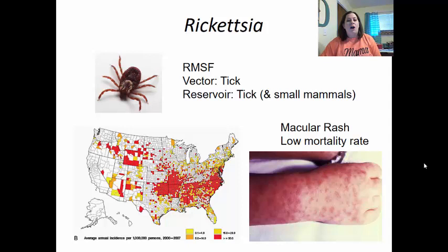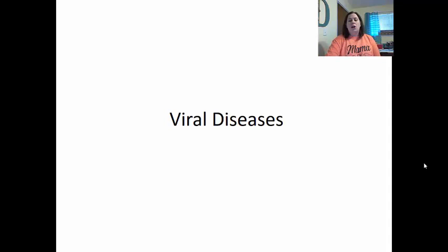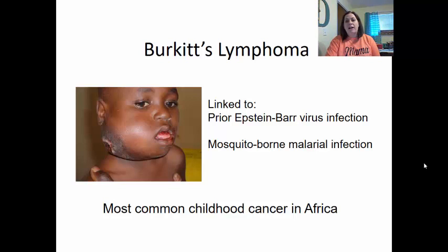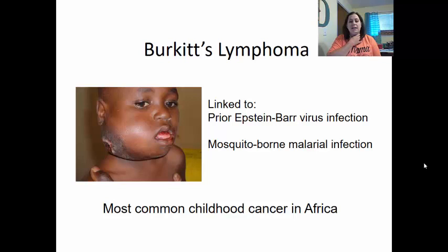Viral diseases of the cardiovascular and lymphatic system include Burkitt's lymphoma, infectious mononucleosis, cytomegalovirus, and hemorrhagic fevers like yellow fever, Ebola, and hantavirus. Burkitt's lymphoma is linked to a prior Epstein-Barr viral infection. A mosquito-borne malarial infection weakens the immune system, allowing the Epstein-Barr virus to resurge and cause damage in the lymph nodes of the neck area. This is the most common childhood cancer in Africa, and it is very rare in the United States but has been seen in AIDS patients.